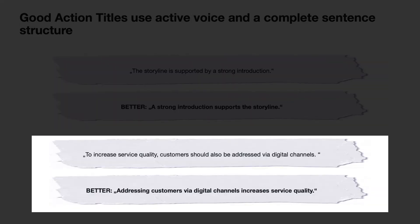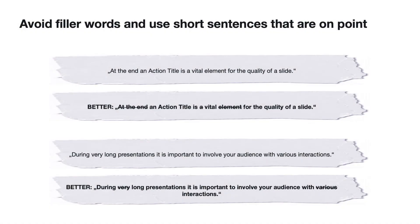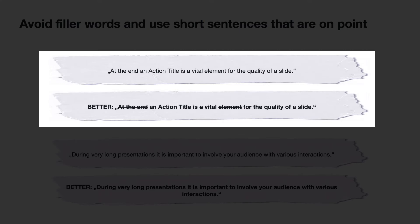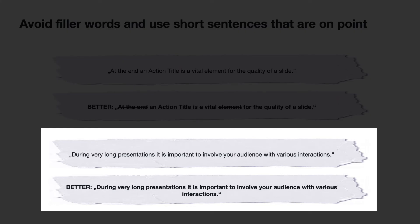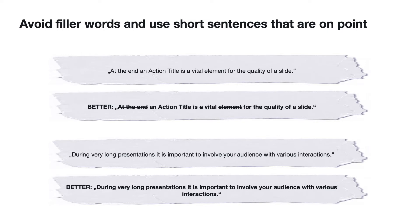Without all necessary items for your sentence structure, an action title is hard to understand. When drafting your action title, make sure to leave out filler words and use short sentences that are on point. Here are two examples of action titles before and after leaving out unnecessary content. By leaving out filler words, your action title is more on point and more punchy. Always take a second look at your action title to check for unnecessary words or parts.